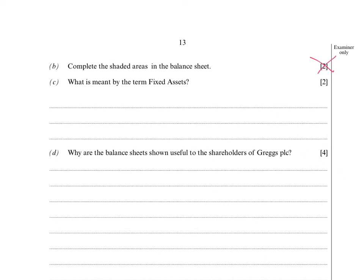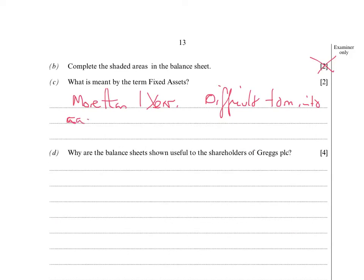It says what is meant by the term fixed assets. Remember, these are assets you're going to have for more than one year - or you plan to have for more than one year. And also they are difficult to turn into cash. I'd say those two things - that would get me two marks. But then I'd give an example: a fixed asset would be a factory.